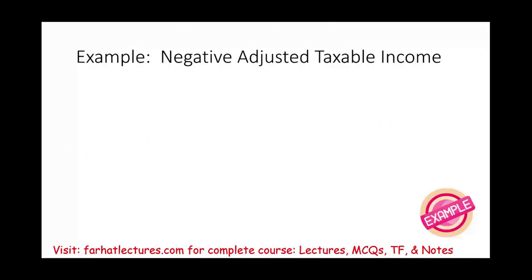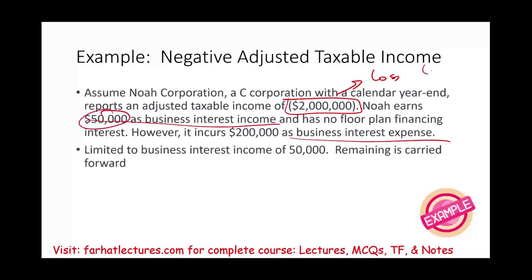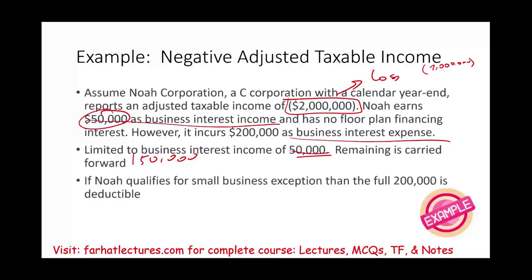Now let's look at an example with a negative adjusted taxable income — operating at a loss. Assume Noah C Corporation has an adjusted taxable income loss of $2 million. Noah earns $50,000 in interest income, has no floor plan financing, and incurs $200,000 in interest expense. The deduction is limited to the interest income of $50,000 — you cannot multiply a loss by 30%. The remaining $150,000 is carried forward to future years when Noah has earnings.